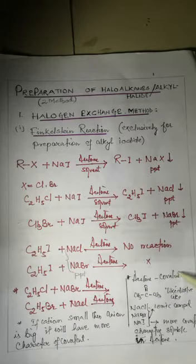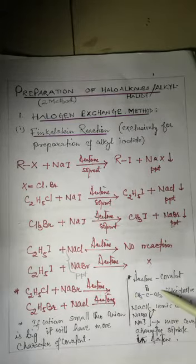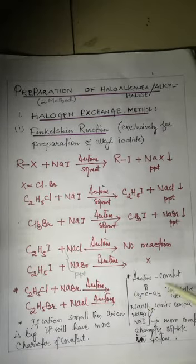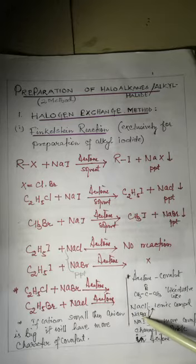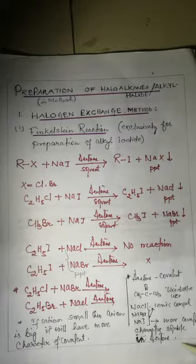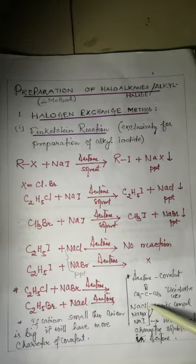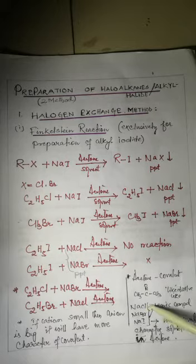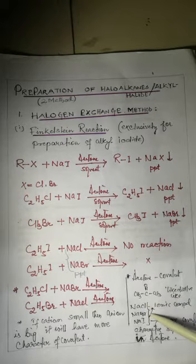Acetone is a covalent compound. Sodium chloride, sodium bromide, and sodium iodide are all ionic compounds. However, sodium iodide has more covalent character and is soluble in acetone. Compared to sodium chloride, sodium bromide has more covalent character, but sodium iodide has the most among the three.